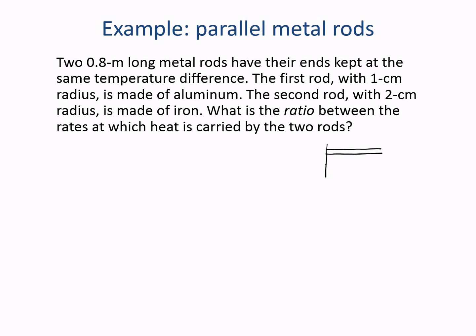If the two rods are kept between the same temperatures, one practical way of doing that would be to have their ends touch common metal plates, which makes the two ends have the same T high and T low. Let's say this is the aluminum rod and this is the iron rod. We actually don't know the temperature difference, so let's apply the equation for heat flow rate twice for the two materials.